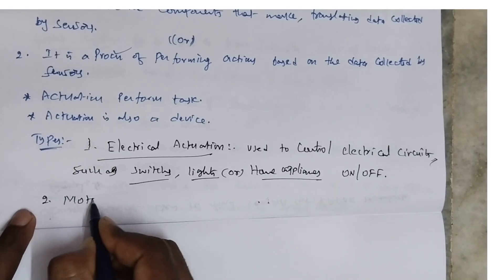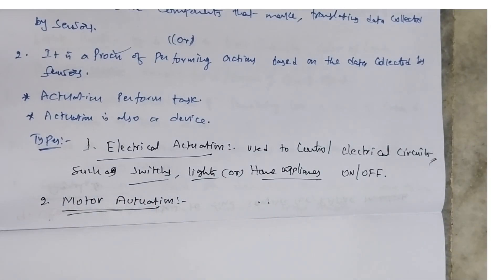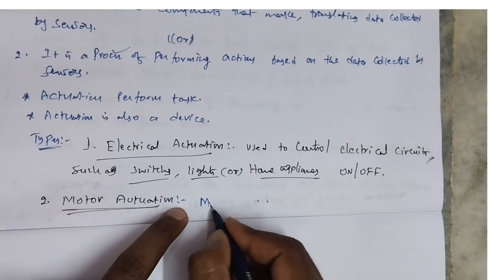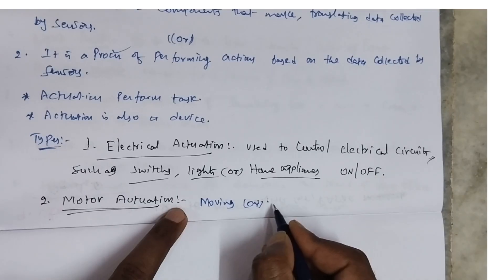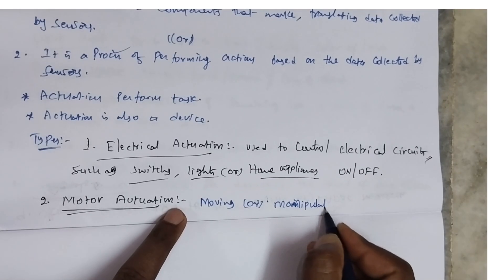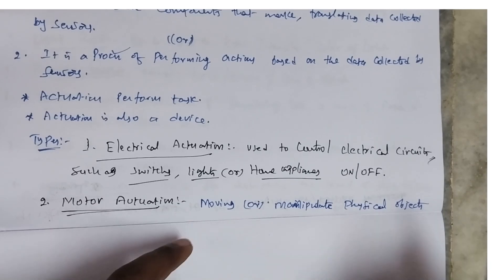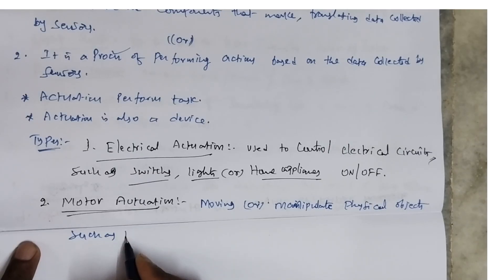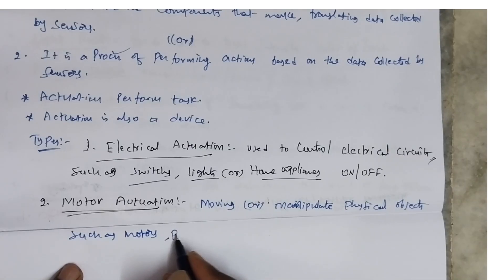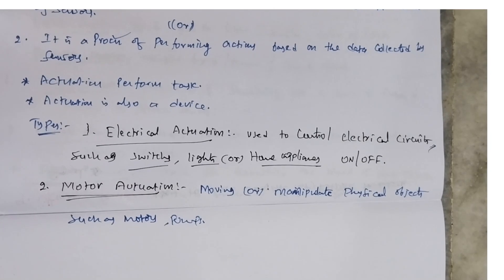The second type is motor activation. Motor activation is nothing but moving or manipulating physical objects, such as motors or pumps. Moving or manipulating physical objects using motors or pumps is called mechanical actuation.